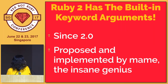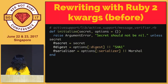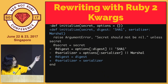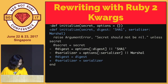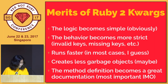Then Ruby 2 finally got the core language feature of keyword arguments. It was implemented by Mame, the man of insane. We can now rewrite the keyword argument-ish code in Rails. Here's a patch rewriting the method. The method signature becomes more clear to the users about what keys to take and what default values to take. The implementation becomes shorter, and it should run faster because the hash manipulation and array manipulation is written in C.